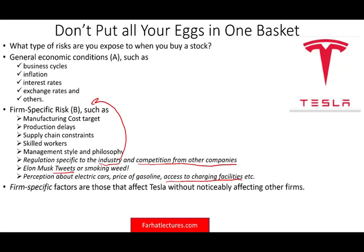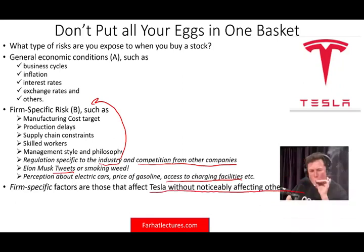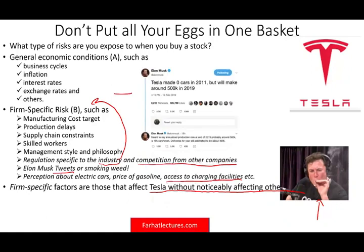Those are firm-specific factors that affect Tesla without noticeably affecting other firms. For example, when Elon Musk smoked weed on the Joe Rogan show, that affected Tesla specifically. When Elon Musk tweeted they would produce 500,000 cars in 2019 and that turned out not to be true, he had to walk it back. He frequently gets into trouble with the SEC because of those tweets. But those issues are firm-specific.